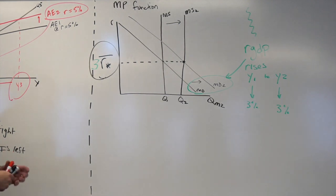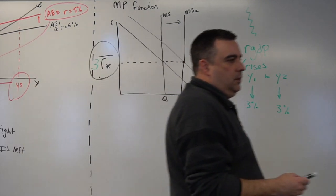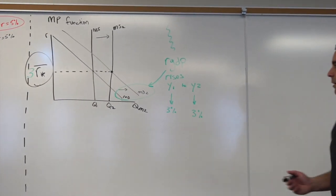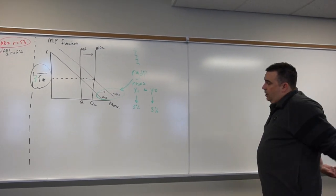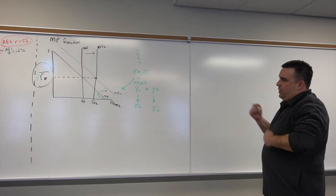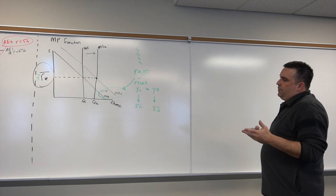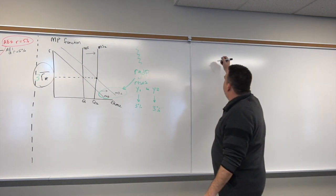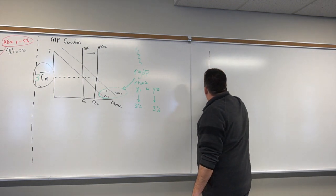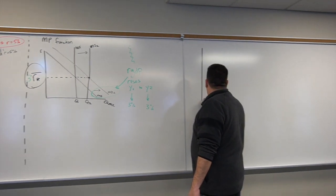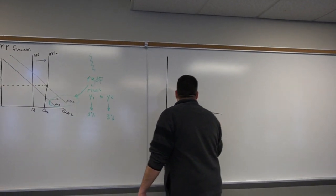That actually is going to give us a way of effectively deriving our MP function. I think it's going to make our MP function look pretty easy. So in the ISMP model, we want to show combinations of R and Y.